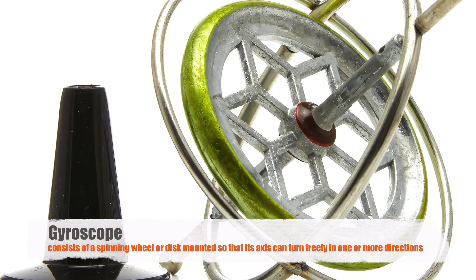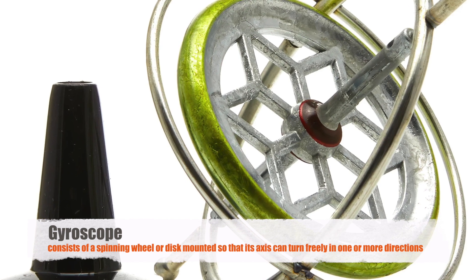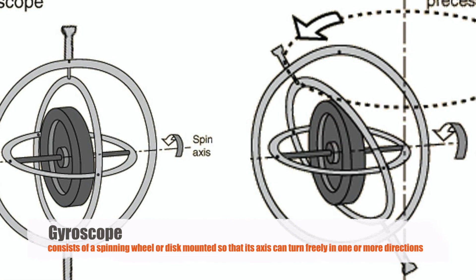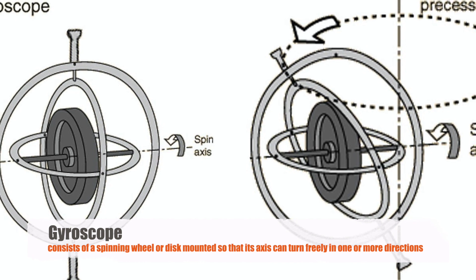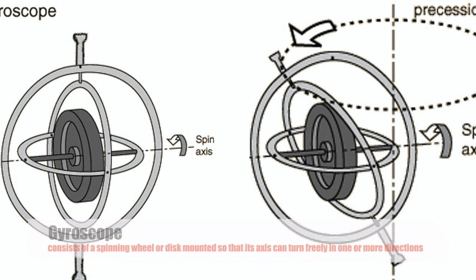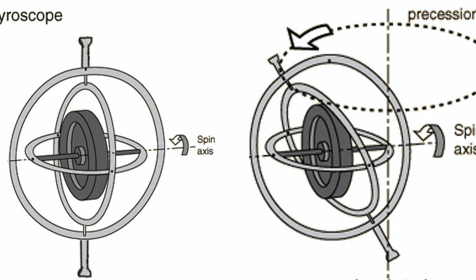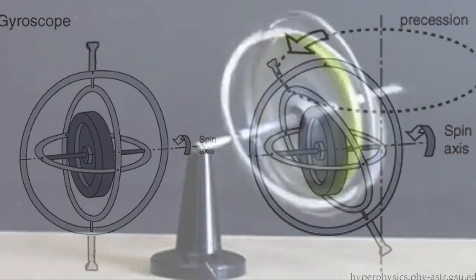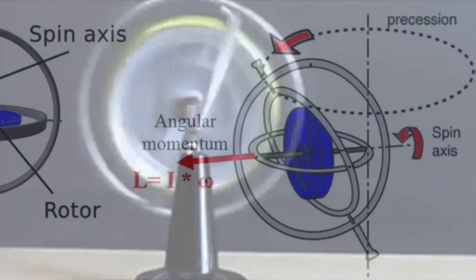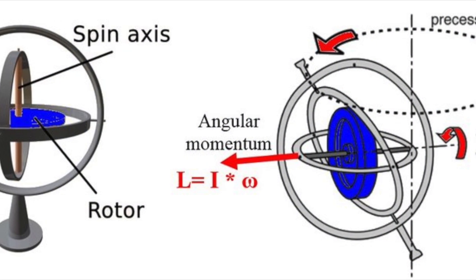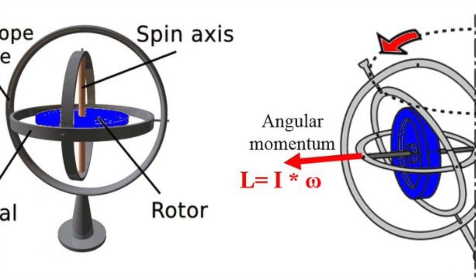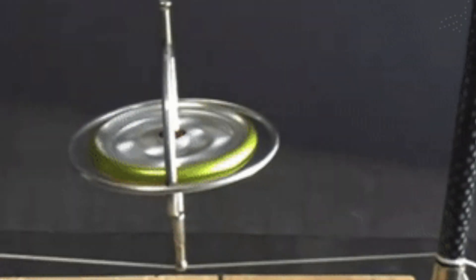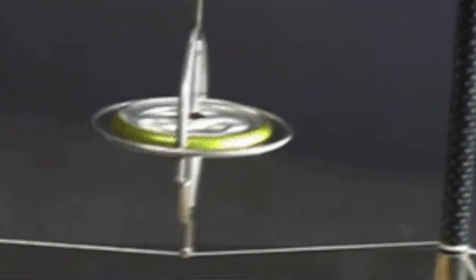A gyroscope, at its core, is a device that consists of a spinning wheel or disc, mounted so that its axis can turn freely in one or more directions. When the wheel is spun, the orientation of the axis remains nearly constant, regardless of the movement of the base. This phenomenon is due to the principles of angular momentum and rotational inertia. The spinning wheel's inertia resists changes to its axis of rotation, allowing the gyroscope to maintain its orientation.